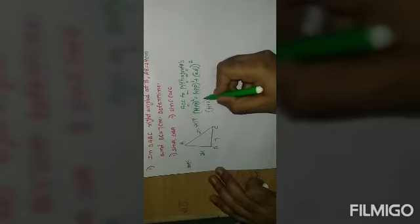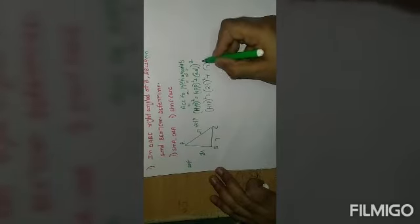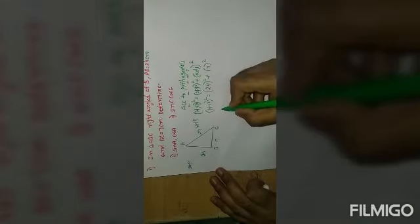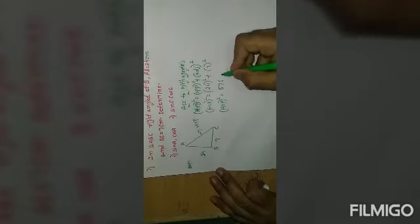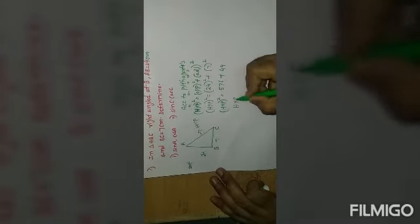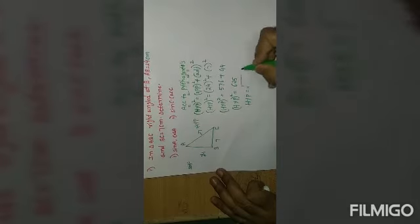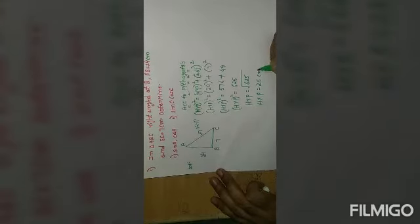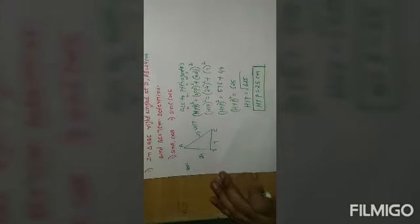Hypotenuse square equals 24 squared plus 7 squared. That is 576 plus 49. So hypotenuse square equals 625. Therefore hypotenuse equals root of 625, which is 25 centimeters.